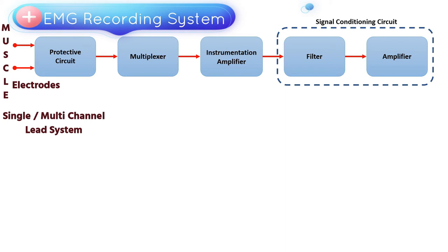All the signals detected are analog signals. They need to be converted to digital signals for further processing. Hence, we use an ADC — analog to digital converter — circuit.